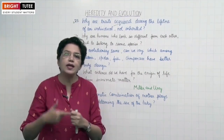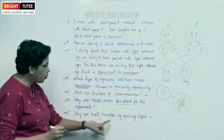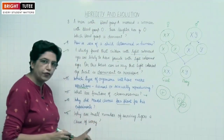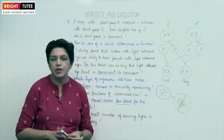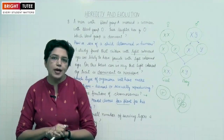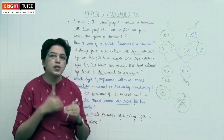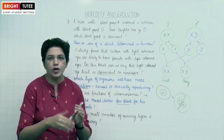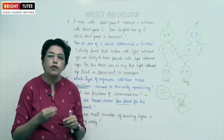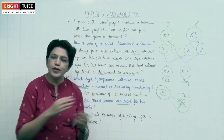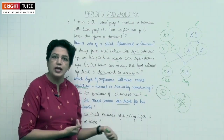Next question: Why are small numbers of surviving tigers a cause of worry? In sexually reproducing organisms, genes and chromosomes are transferred from parents to offspring generation after generation. If this number keeps decreasing, the gene pool will be totally lost and future generations of humans will not be able to see tigers — they will be completely wiped out from the earth once we lose the gene pool of tigers.